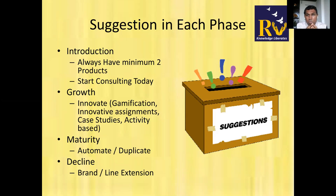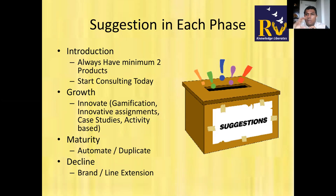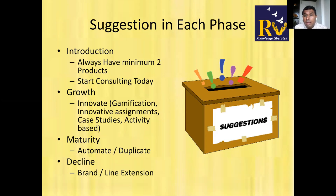For example, this recording I'm doing today — it's a one-time effort, but anyone can watch it anytime. That's duplication. Once a product reaches maturity, leverage the power of duplication. In the Decline phase, the first step is acceptance. Once you've accepted that a product is declining, immediately start building a new product. The extension could be a line extension — same target, different size or format — or a brand extension targeting new audiences.